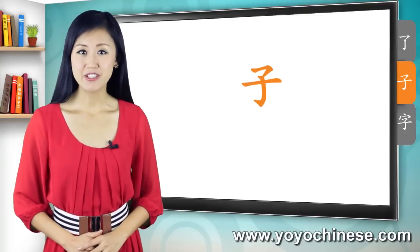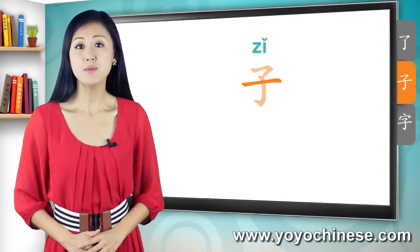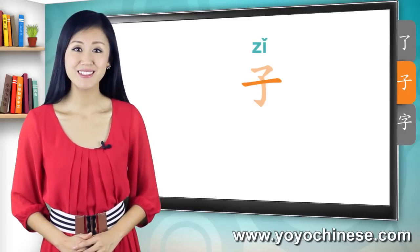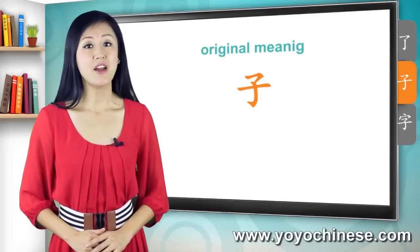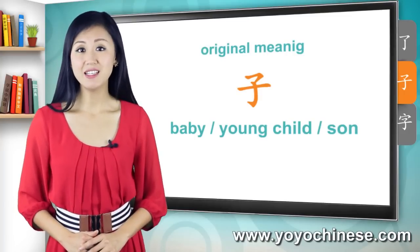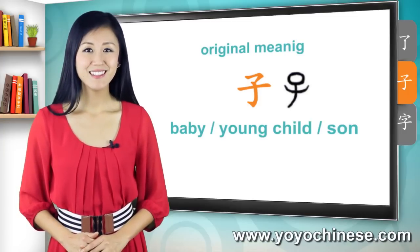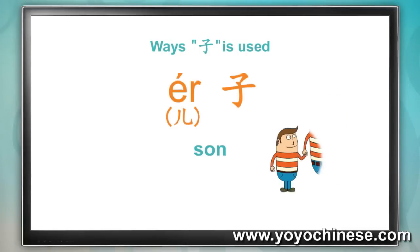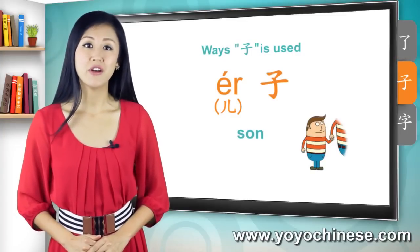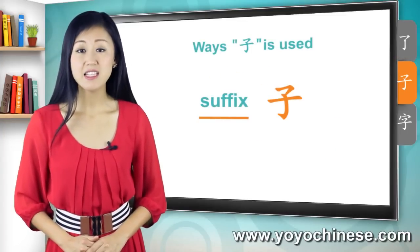This is our next character. It's pronounced 子. It's basically just a 了 with a line through it, as if someone has tried to strike it out. This is how it's written stroke by stroke. Originally, this character meant baby, young child, or son. Does it look like a baby stretching his or her arms out? This character is part of the word for son 儿子. This character isn't really used on its own anymore in modern Chinese, but you often find it used as a suffix.